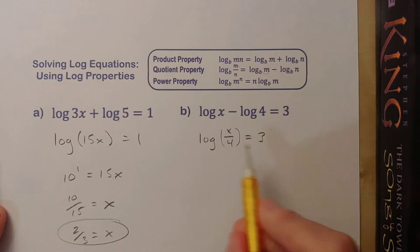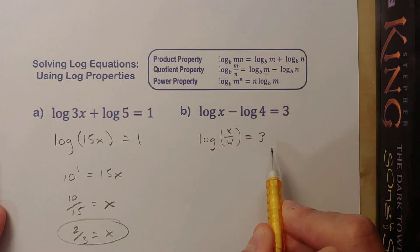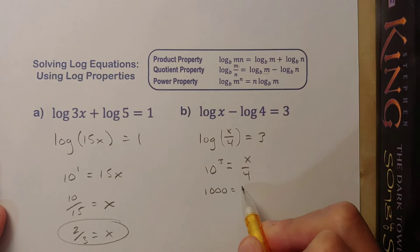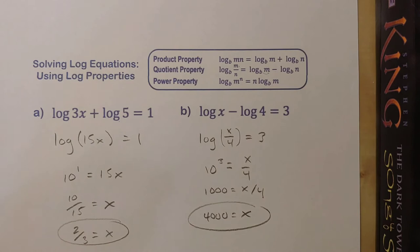Now I have a single log that equals a value, so I can just convert this to exponential form and solve. 10 to the power of 3 equals x over 4. 10 cubed is 1000. Multiply both sides by 4. X is 4000.